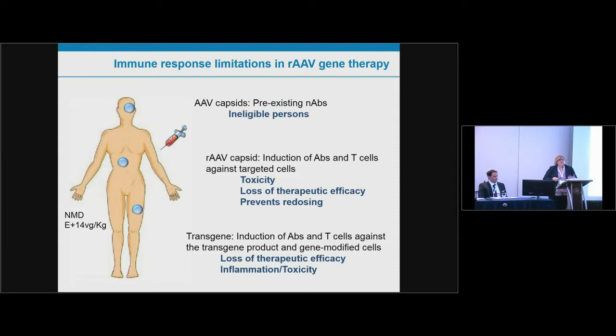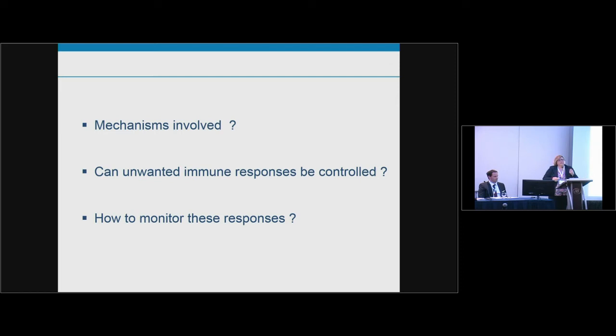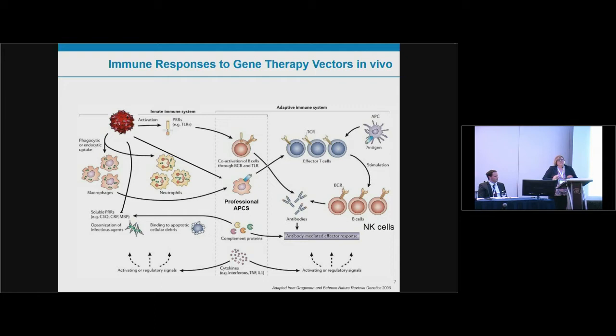I'll cover mechanisms involved, whether we can control these immune responses, and how to monitor and predict them. Generally speaking, when AAV is introduced into the body, it first encounters all effectors of the innate immune response — complement proteins and other soluble factors that bind to AAV and direct it to phagocytes. Then there is presentation to professional antigen-presenting cells designed to detect viruses and pathogens, followed by the start of adaptive immune responses — T or B cell — and potentially natural killer cells.